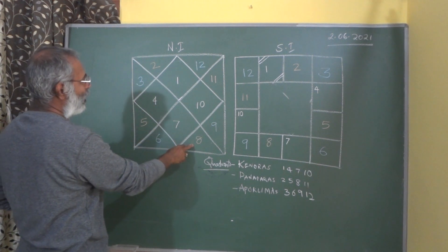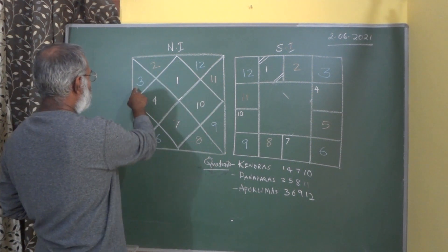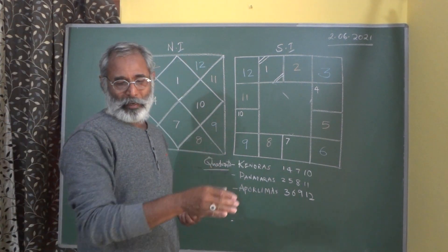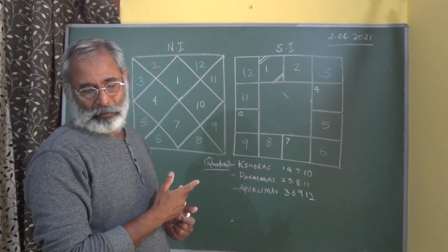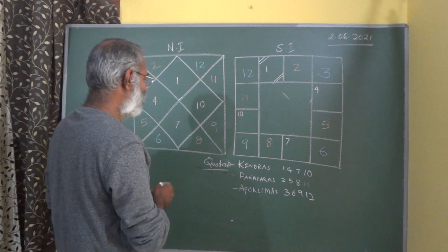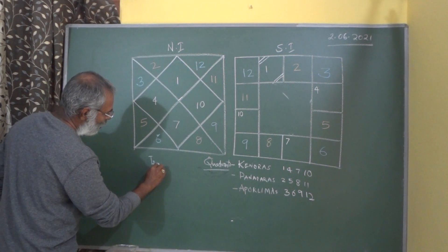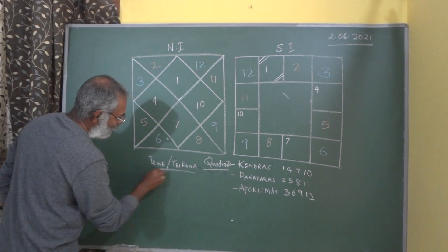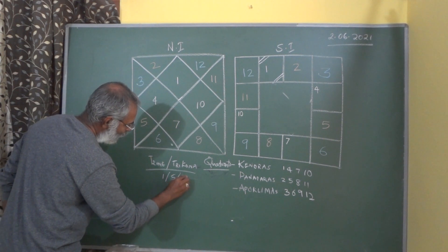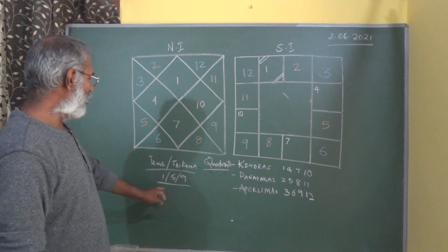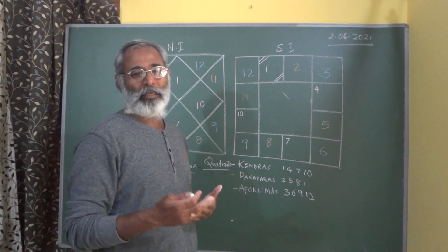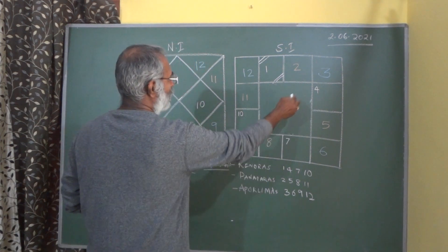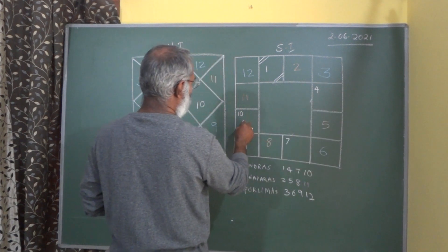The 2nd, the 5th, the 8th and the 11th are the Panaparas. The 3rd, the 6th, the 9th and the 12th are the Apoklymas. The Trikona, or Trine in English — T-R-I-N-E — is the 1st, 5th and the 9th signs. The Upachayasthana, the house of growth, consists of the 3rd, the 6th, the 10th and the 11th.